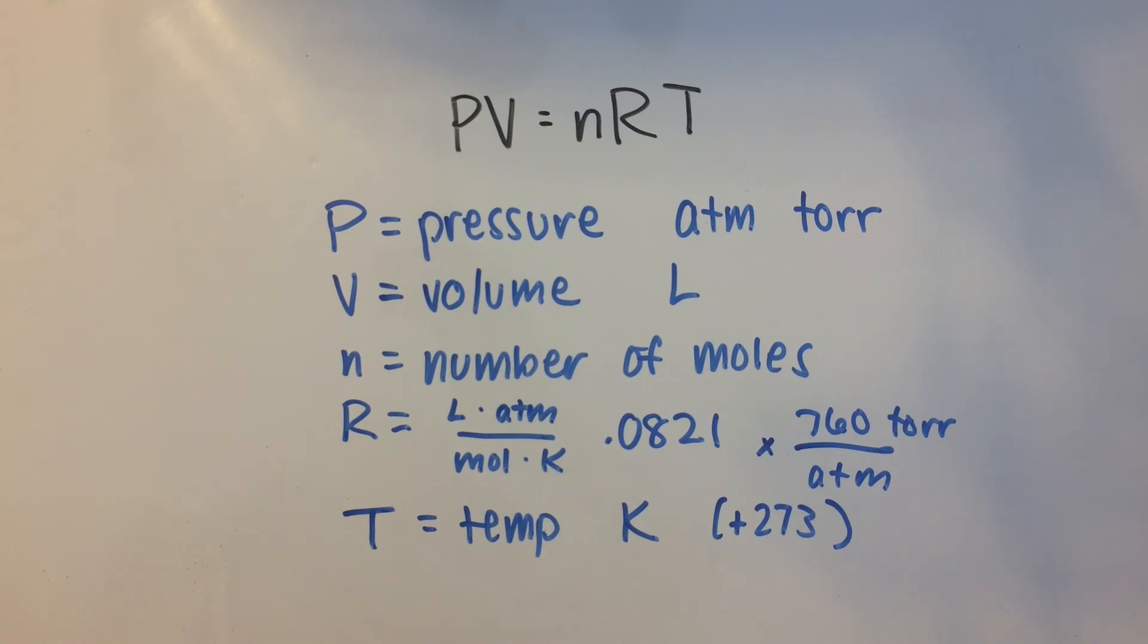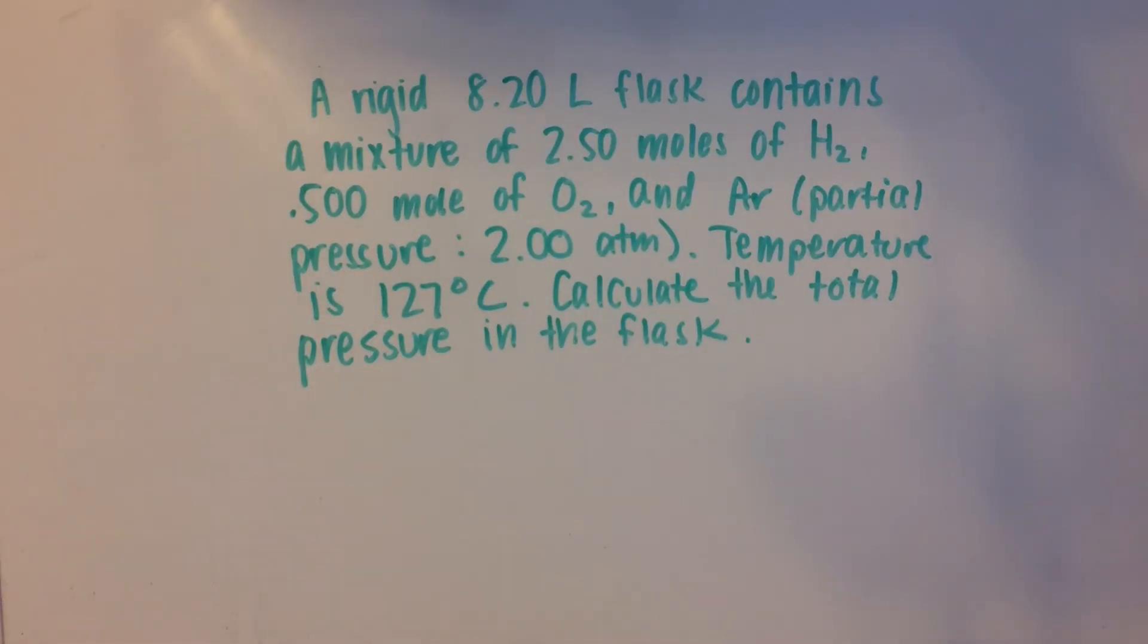Now give me a second and I'll get you an example problem. Okay, I just got this one from online. A rigid 8.2 liter flask contains a mixture of 2.5 moles of hydrogen, 0.5 moles of oxygen, and argon with partial pressure of 2.00 atmospheres. The temperature in the flask is 127 degrees Celsius. Calculate the total pressure in the flask.